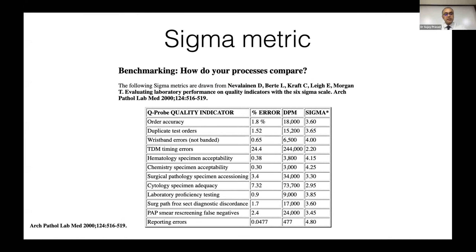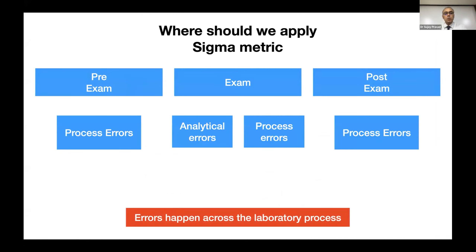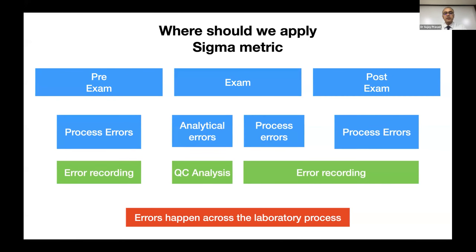The same article compared lab processes using Q-probes data: order accuracy, duplicate test orders, and various activities were assessed with their sigma values. TDM timing errors came in at 2.2 sigma, which is pretty low — and this reflects the well-known challenge that therapeutic drug monitoring sample timing has always been difficult in practice.